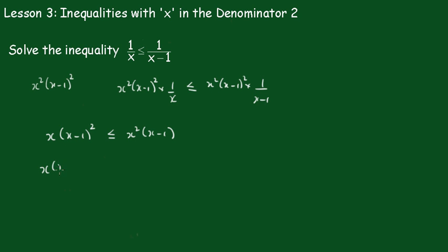Taking this across to the other side, we'll have x outside of x minus 1 all squared minus x squared into x minus 1 is less than or equal to 0. The highest common factor here is x outside of x minus 1.